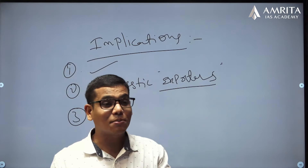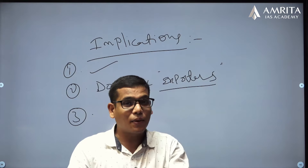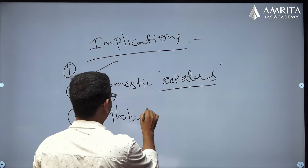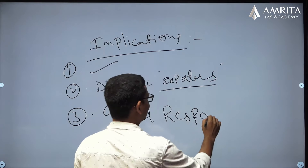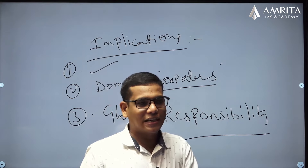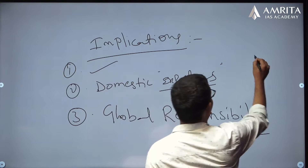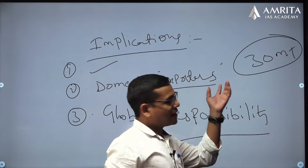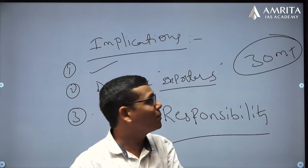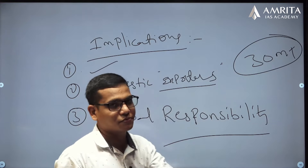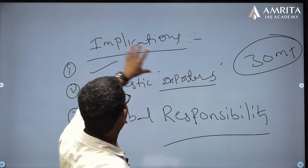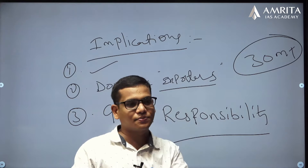Another implication is India's global responsibility. India wants to be a Vishwa Guru and aspires to a permanent seat on the UN Security Council. The buffer stock of 30 million tons is well above the required buffer of around 26 to 27 million tons. India has enough food grains, yet when the world faces a problem, it stopped exports. How can India defend this position internationally and claim a global leadership role?